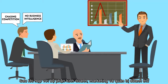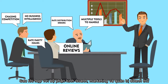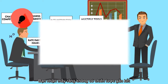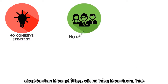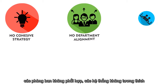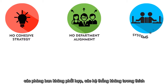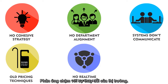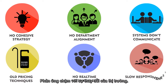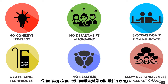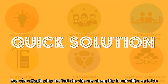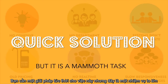After meeting your sales, marketing, and revenue management folks, you realize there's no cohesive strategy, no department alignment, systems don't communicate, old pricing techniques, no real-time distribution, and slow responsiveness to market changes. You need a quick solution to this, but it is a mammoth task.